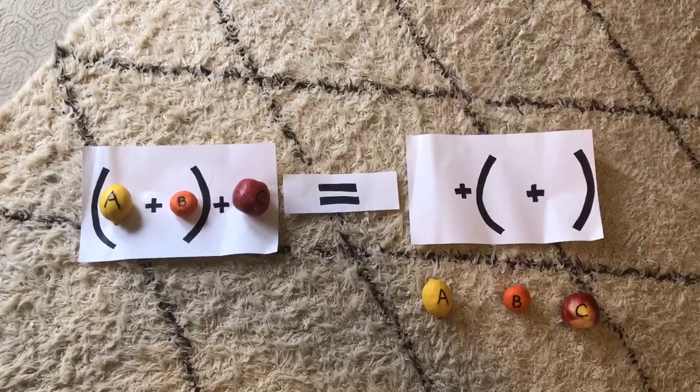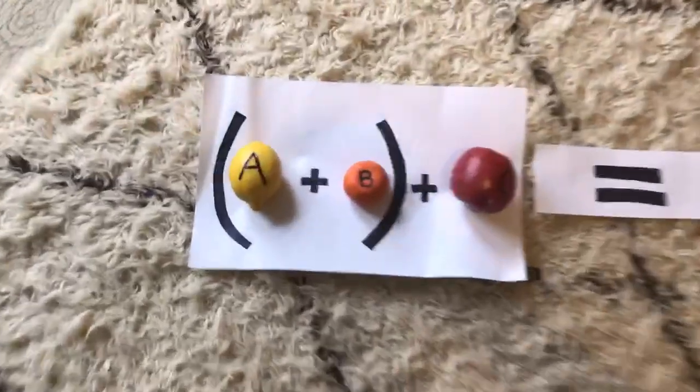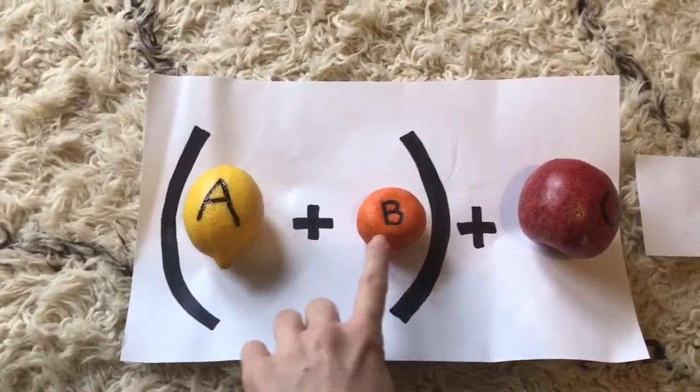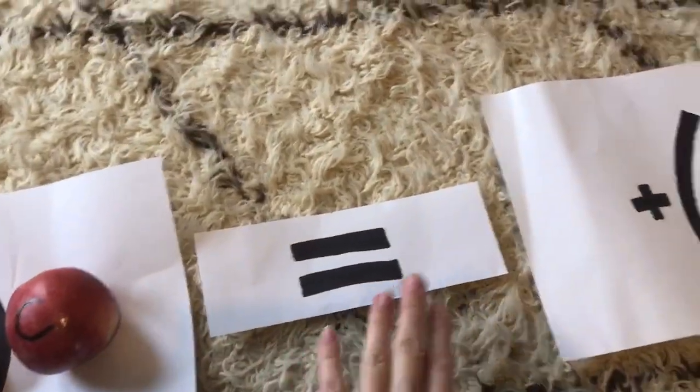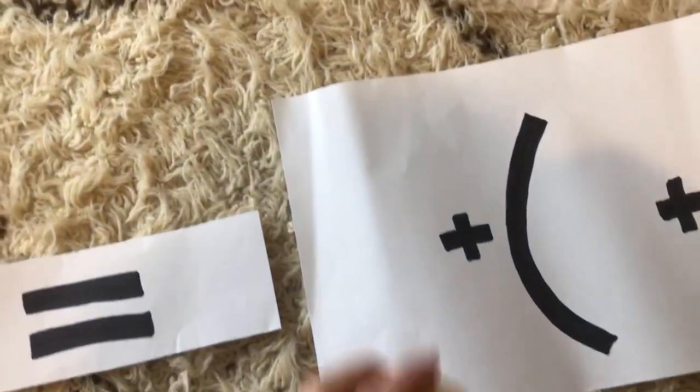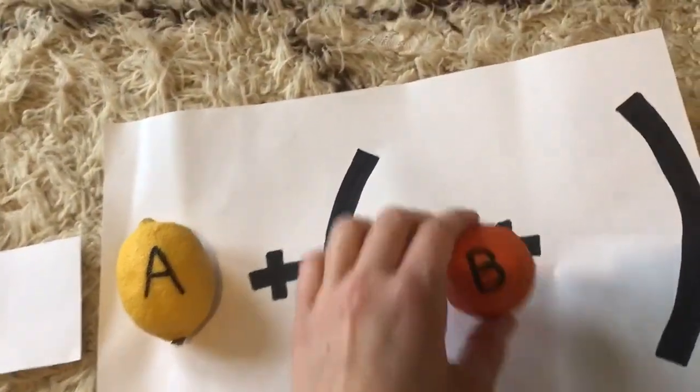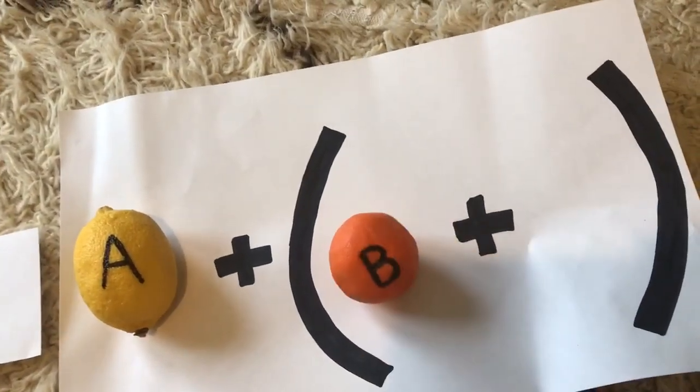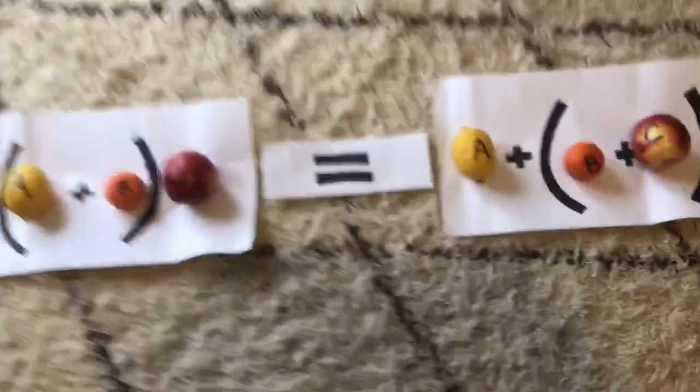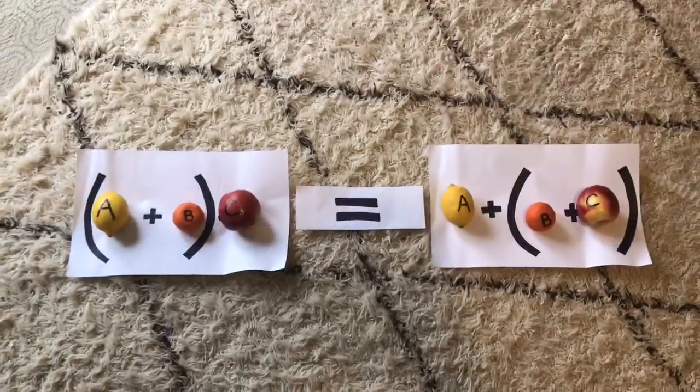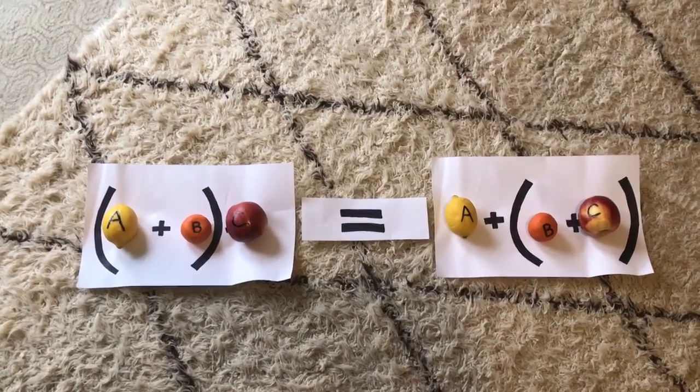We just go through and say: parentheses A, will point to the lemon over there, parentheses A plus B plus C equals A plus parentheses B plus C parentheses. And they can see that it's just a mirror image and that the parentheses things are regrouped, and that's all there is to it.